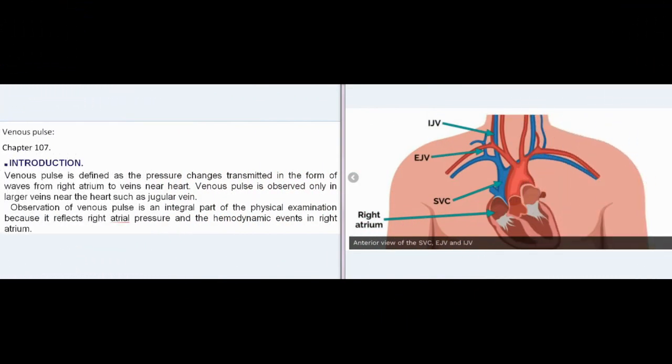Venous Pulse, Chapter 107. Introduction: Venous pulse is defined as the pressure changes transmitted in the form of waves from right atrium to veins near heart.